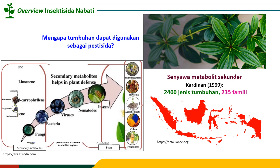Senyawa metabolit sekunder adalah senyawa yang hanya dihasilkan oleh tanaman di saat mengalami kondisi cekaman tertentu. Senyawa ini tidak diproduksi secara teratur seperti senyawa metabolit primer seperti karbohidrat dan protein, tapi hanya dihasilkan di saat tertentu, dan jenis senyawa yang dihasilkan pada masing-masing kondisi cekaman juga berbeda. Menurut literatur Kardinan 1999, pada tahun 1999 sudah ada 2.400 jenis tumbuhan dari 235 famili yang dilaporkan berpotensi sebagai sumber pestisida nabati.